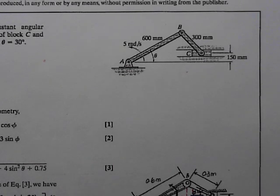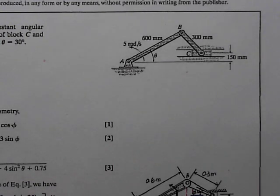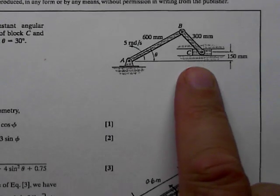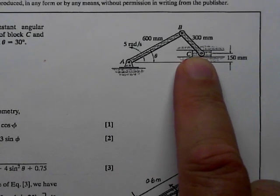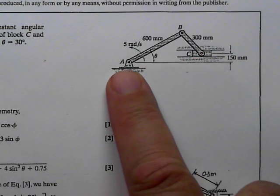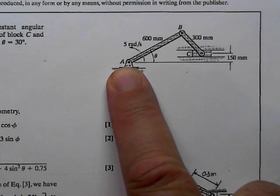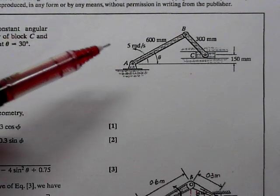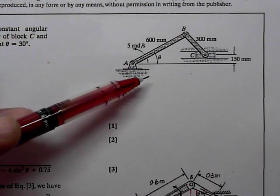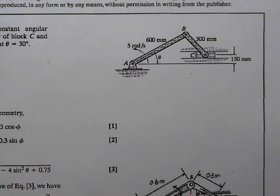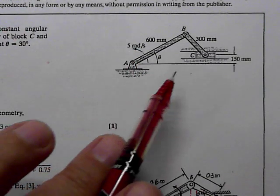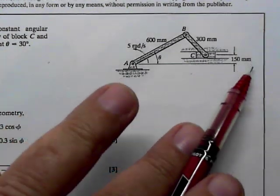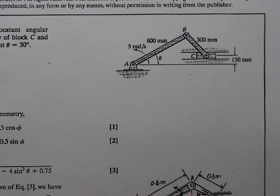In this video I'm going to take a look at a couple of example problems out of the textbook and use the idea of instant center to solve the problems. What we have is a slider crank — a little bit different slider crank where the line of sliding is offset from the pivot joint, which makes the geometry more interesting. We know the angular velocity of link AB and we want to find the speed of this block and the angular velocity of the connecting link.